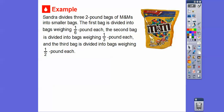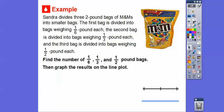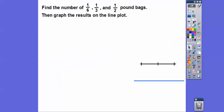Here's another example. Sander divides three two-pound bags of M&Ms into smaller bags. The first bag is divided into bags that weigh one-sixth of a pound each. The second two-pound bag is divided into one-third of a pound each. And the third two-pound bag is cut into one-half of a pound each. They want us to find the number of one-sixth-pound bags, one-third-pound bags, and one-half-pound bags, and graph the results on a line plot.